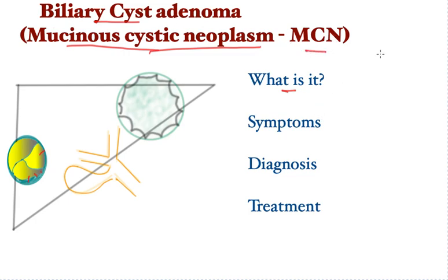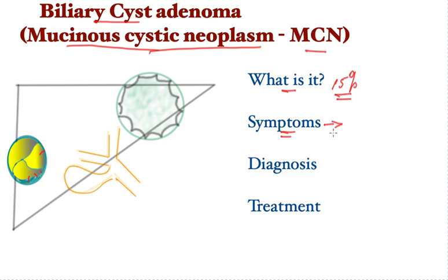Why is it important? Because 15% of these cysts may turn malignant over the lifetime of a person. The great majority do not cause symptoms; however, if of large enough size they can cause pain, fullness, early filling after a meal, and tiredness. Rarely, if malignant transformation happens, you may have features of malignancy such as increased pain, weight loss, loss of appetite, and less commonly jaundice or other complications.